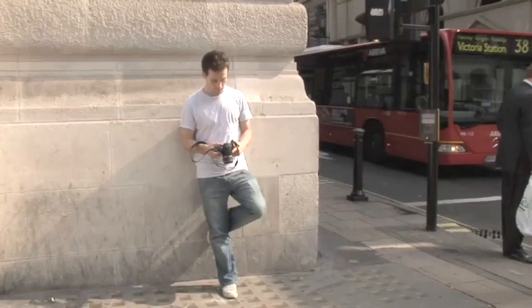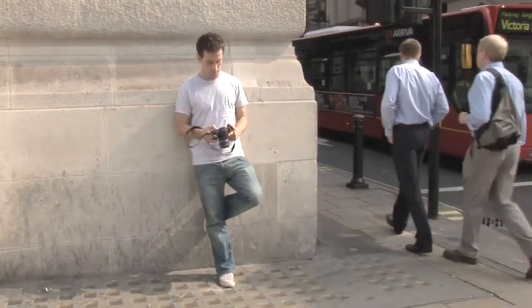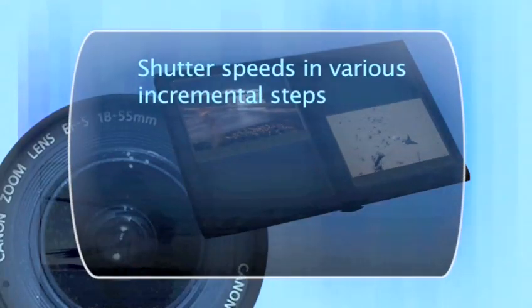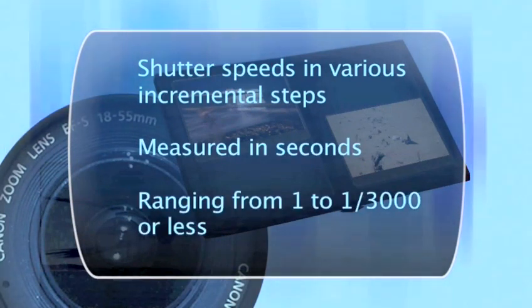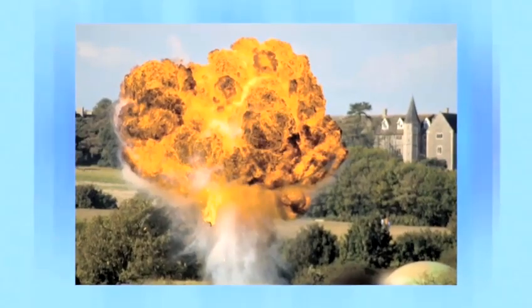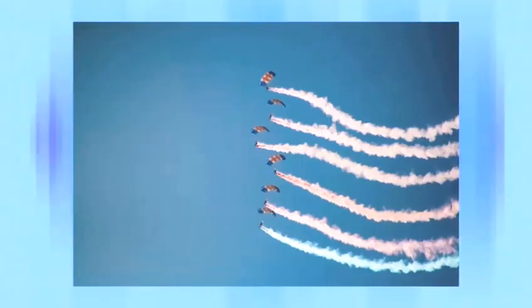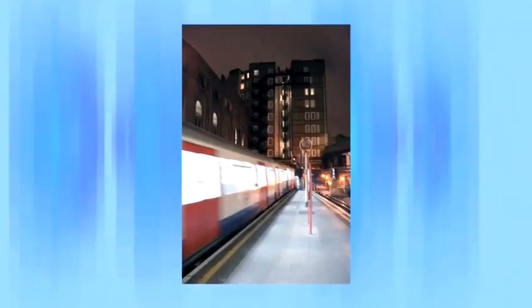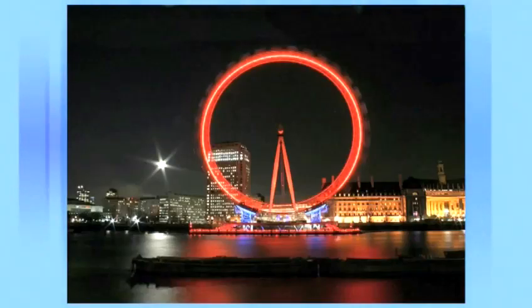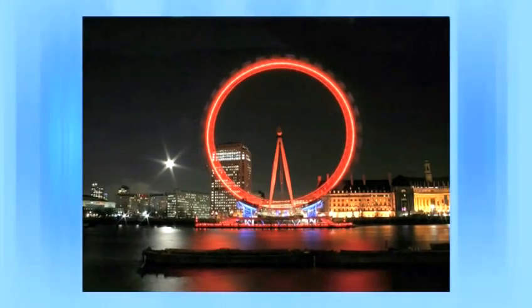Shutter speed: your camera's shutter speed is basically the amount of time you're letting your camera look at things in the outside world. Shutter speeds come in various incremental steps, measured in seconds, ranging from one to one three-thousandth or less. Low shutter speeds are great for taking a snap of something fast-moving, because the camera is only looking at the fast-moving thing for a very short amount of time and can make a single image out of it without getting confused. A high shutter speed will give a great motion blur effect, because the camera is looking at everything going on for a long time and amalgamating them into one single image.